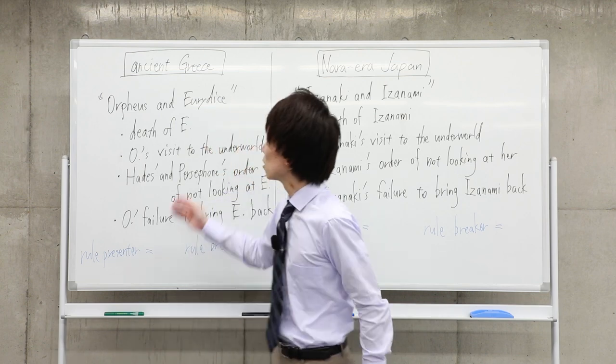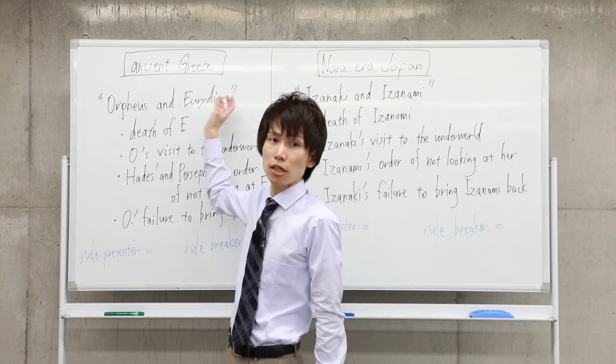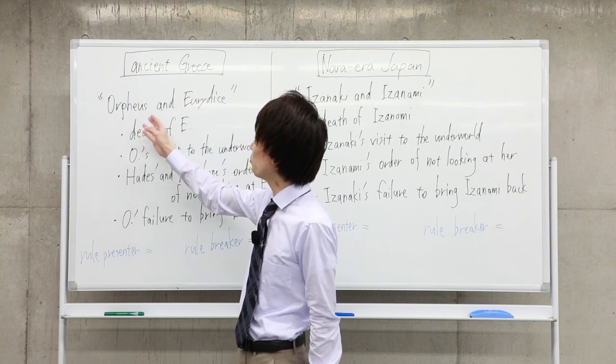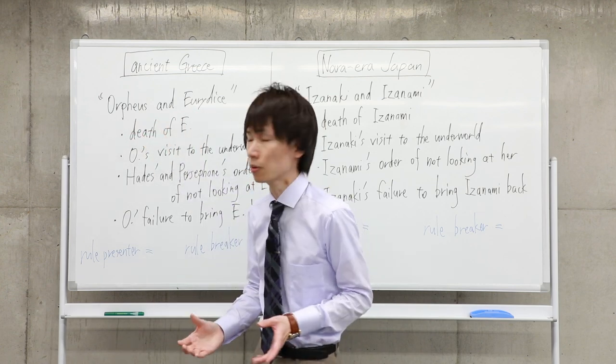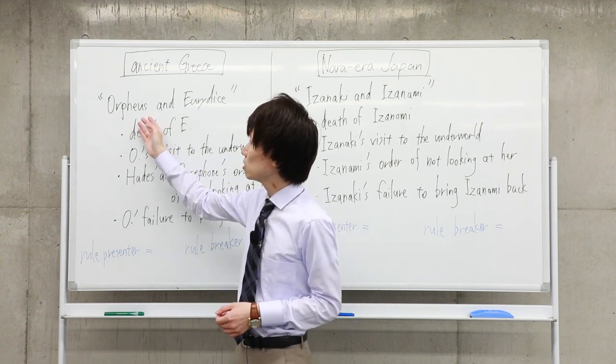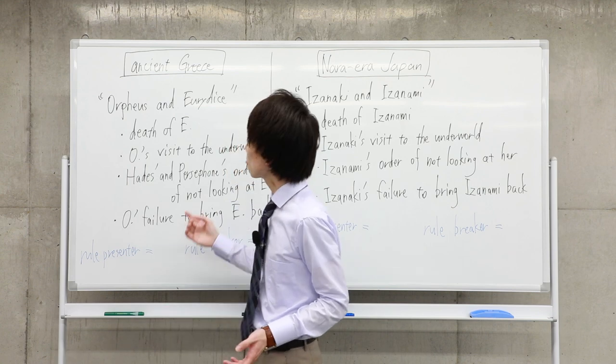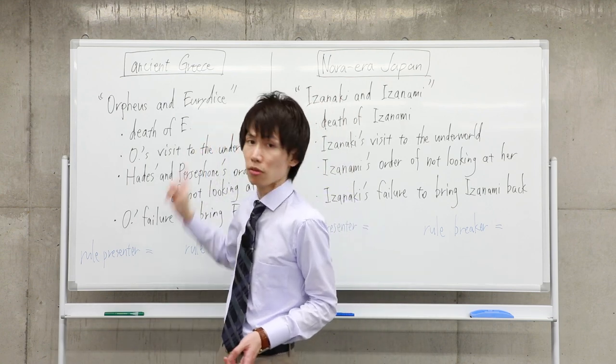Let's get started from the story of ancient Greece, the myth of Orpheus and Eurydice. This is a story about a married couple. The husband is Orpheus, a famous musician, and his wife's name is Eurydice.